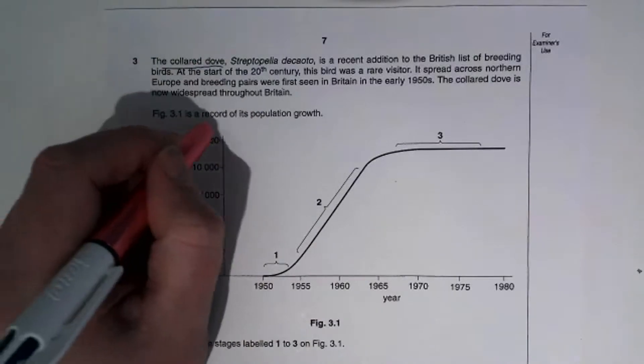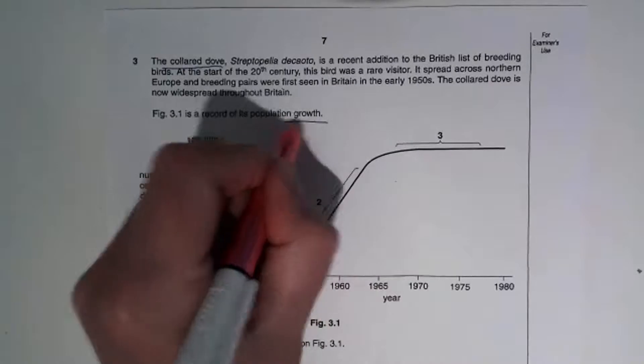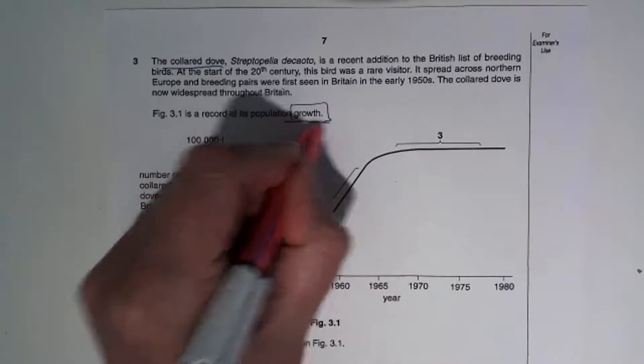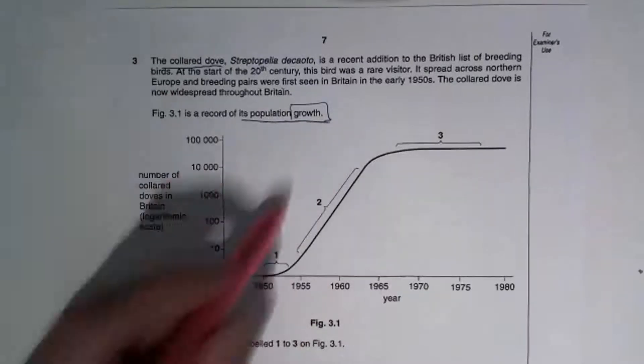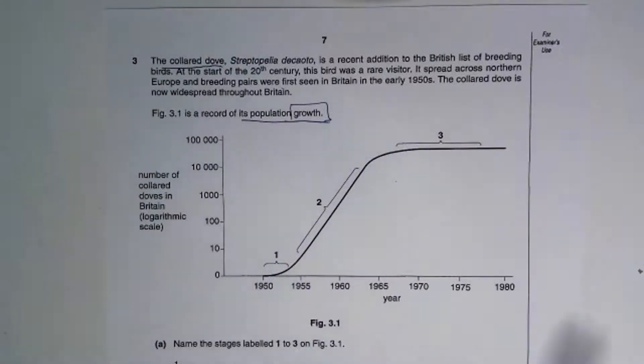It then says figure 3.1 is a record of its population growth. So this is the first thing, population growth. So we know, and look at the diagram, we know we've got a population growth curve here.